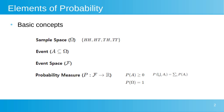Additionally, for mutually exclusive events, the probability of their union is the sum of their individual probabilities. These concepts form the theoretical foundation of probability theory, essential for fields like statistics and machine learning.